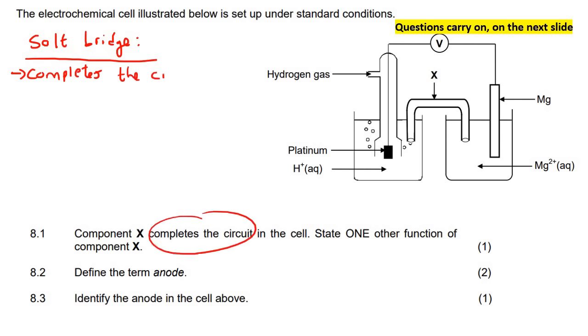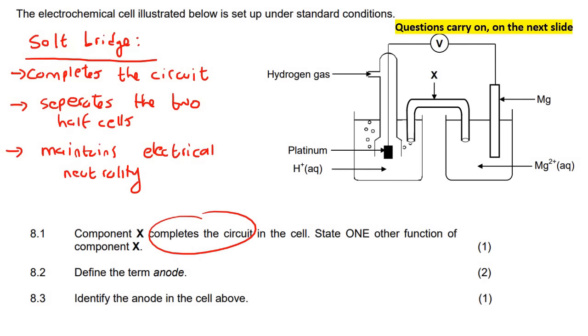We know that a salt bridge has quite a couple different functions. One of them, it completes the circuit. That's the one that they said, but I'll add it anyway just for revision purposes. It completes the circuit, separates the two half cells, and maintains electrical neutrality. So it keeps everything electrically balanced. They gave us this one, so you can obviously choose between this one or this one because they just want you to state one other function.